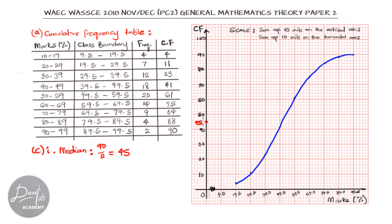This is 45. Then we trace to the curve. We trace 45 to the curve so that we can get the corresponding mark that is in line with our 45 on the cumulative frequency, which is the median, the 50%. And from here, we can see with this gradation that the median is 51.5%. So 45 on the cumulative frequency axis corresponds to 51.5 on the mark axis. The median mark from this cumulative frequency curve is 51.5%.